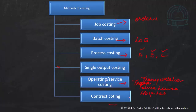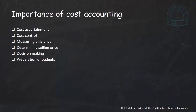Contract costing is when work is done by entering into a contract, for example in construction companies. These are the different methods of costing.